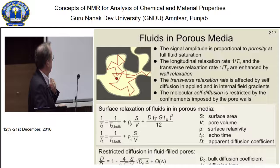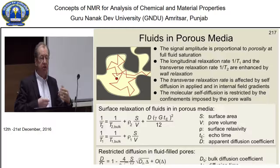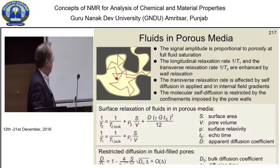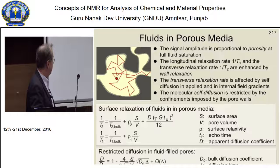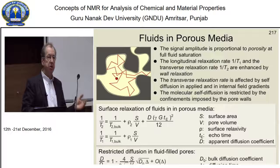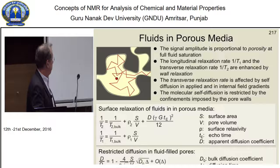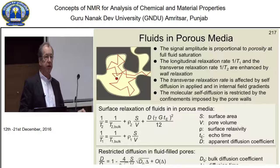There is additional relaxation from the surface of the pores: whenever a molecule hits the surface, it loses some magnetization. This surface term very often dominates, so T1 is actually proportional to the radius or diameter of the pore — the distribution of relaxation times T1 gives us the distribution of pore radii. That is very valuable information for people who study porous media.